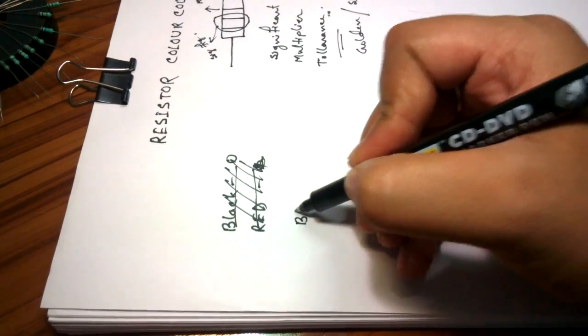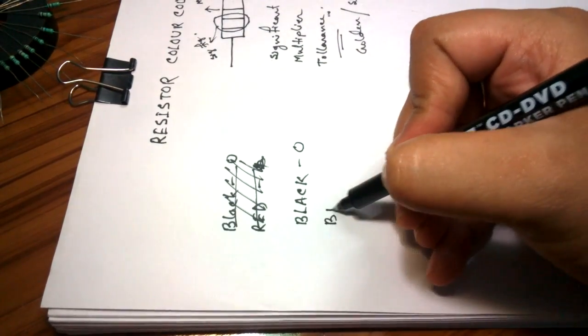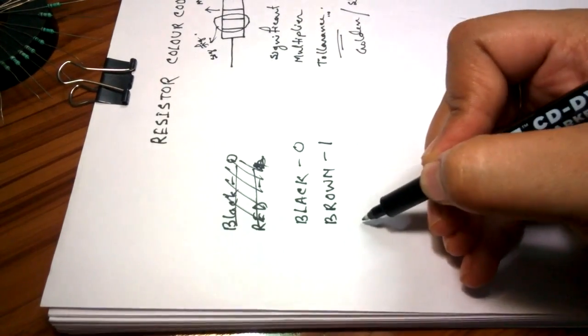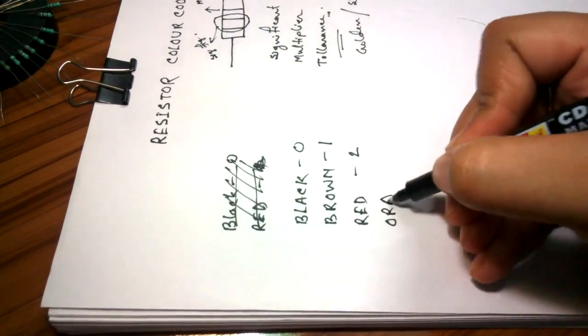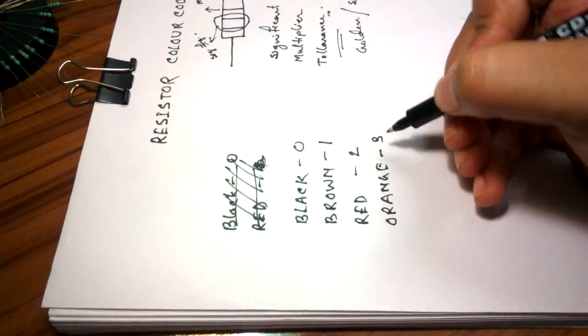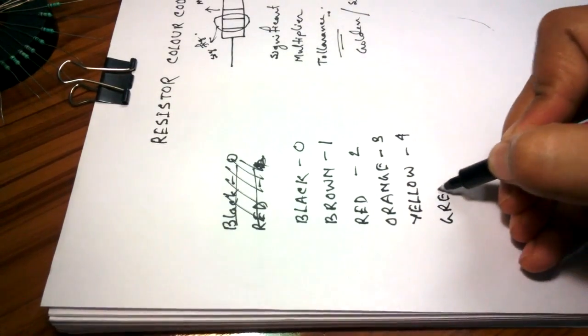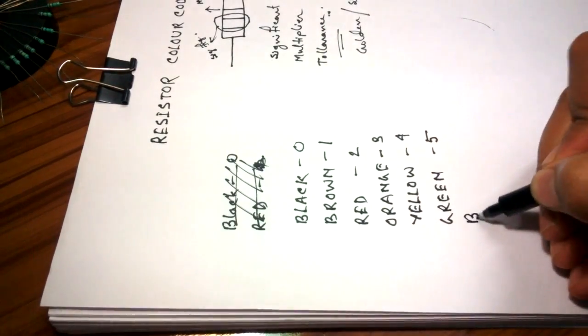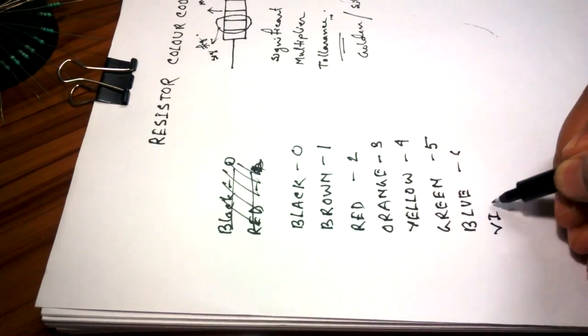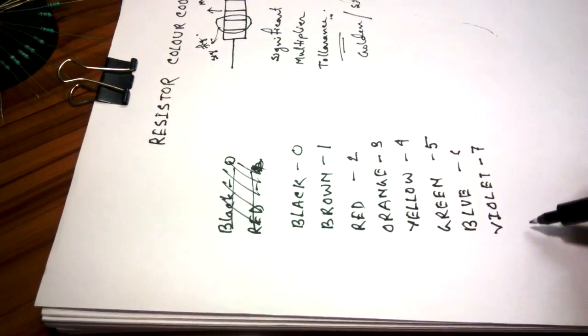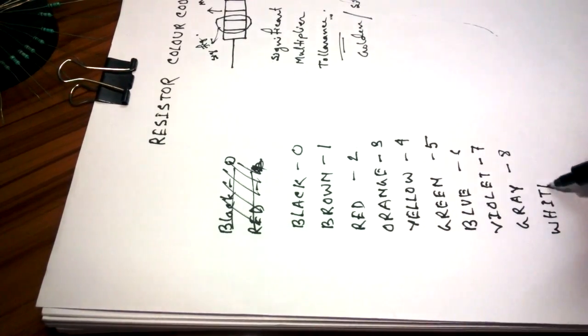In case of black, the value is 0. In case of brown, the value is 1, red, the value is 2, orange, yellow 3, yellow 4, green 5, blue 6. Then comes violet, violet is 7, gray 8 and white is 9.